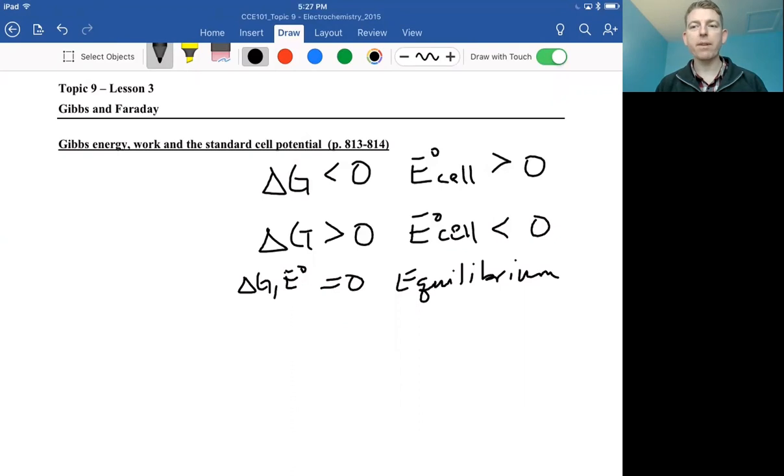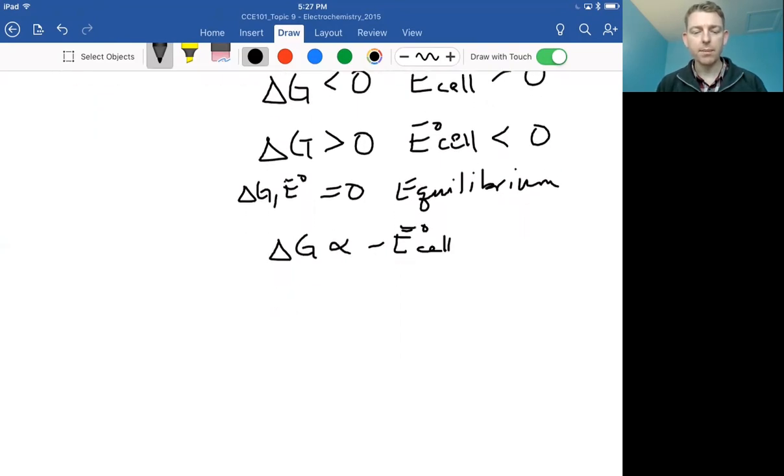Okay, so just by virtue of looking at this, we can say that there's some connection where delta G is related to negative E cell potential, negative standard cell potential. So how are we going to connect these things and get rid of that proportional sign and turn it into an equal sign?